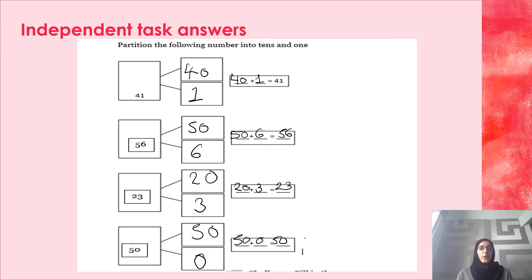Now, children, we are going to go through our answers. Make sure you have a green pen or you can just simply mark with a pencil. Number 1, we have the number 41. 4 tens make 40. And then we have 1 one. Then I've got 40 add 1.